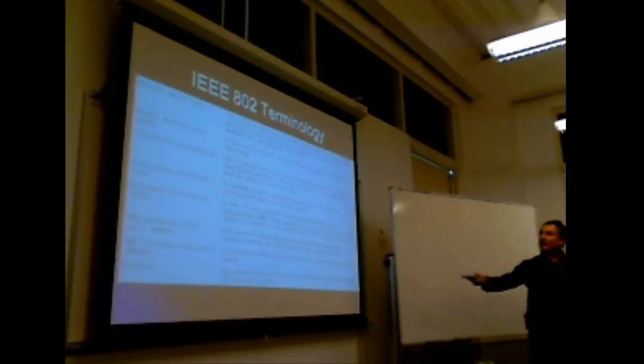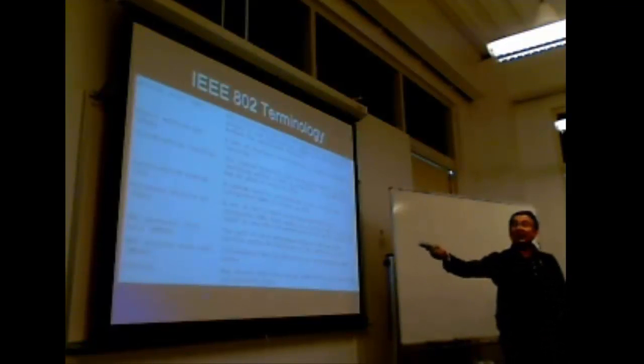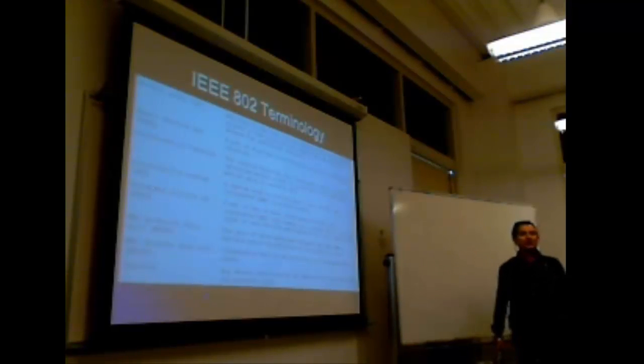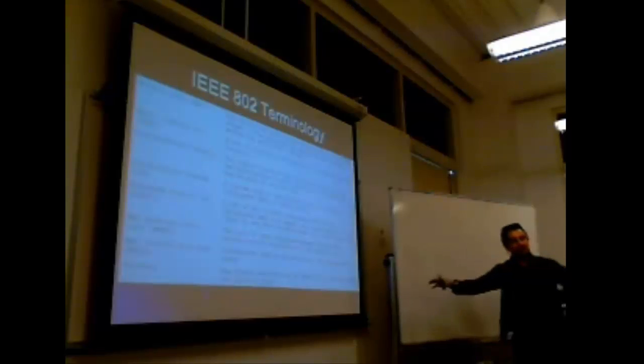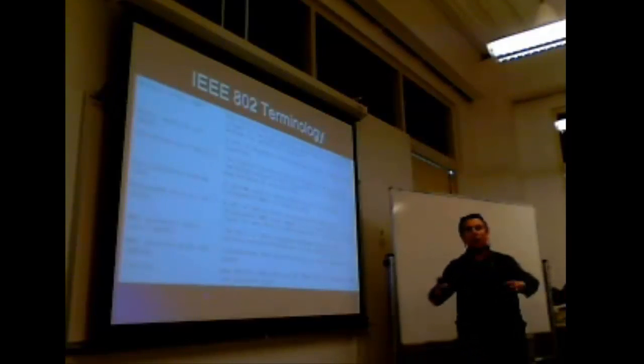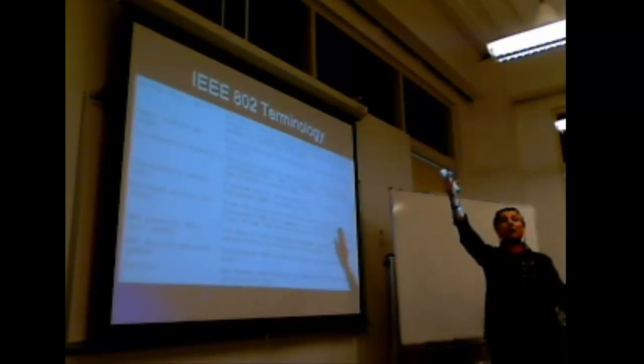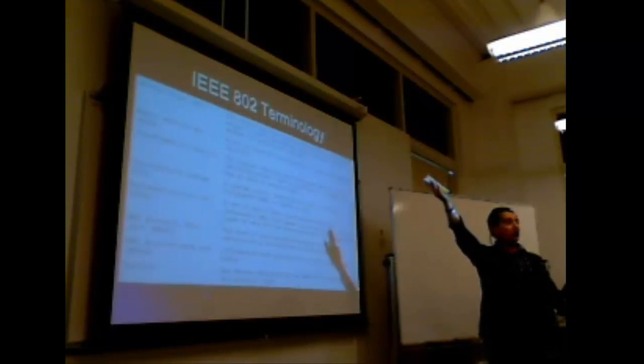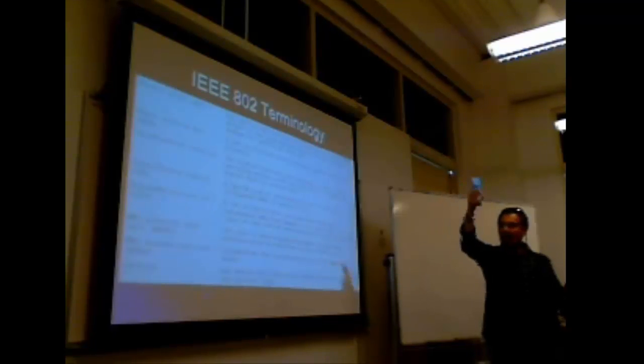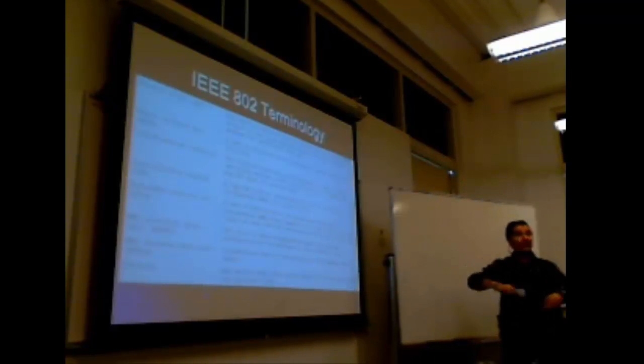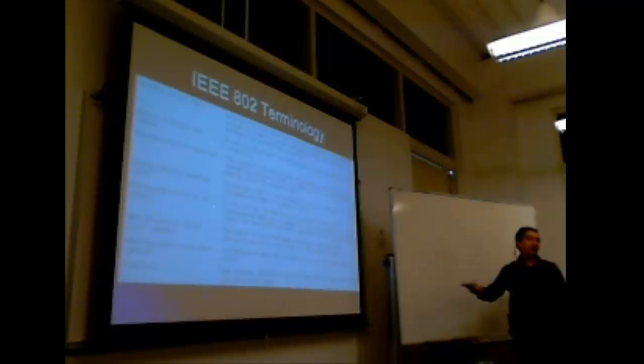An extended service set, if you have more than one BSS, basic service set, you have extended service set. So, in other words, we have BSS, a lot of BSS, and they are all going into a distribution system. And that distribution system most probably goes to a portal, which goes to the internet. So, if that is the case, this whole thing is going to be called extended service set.